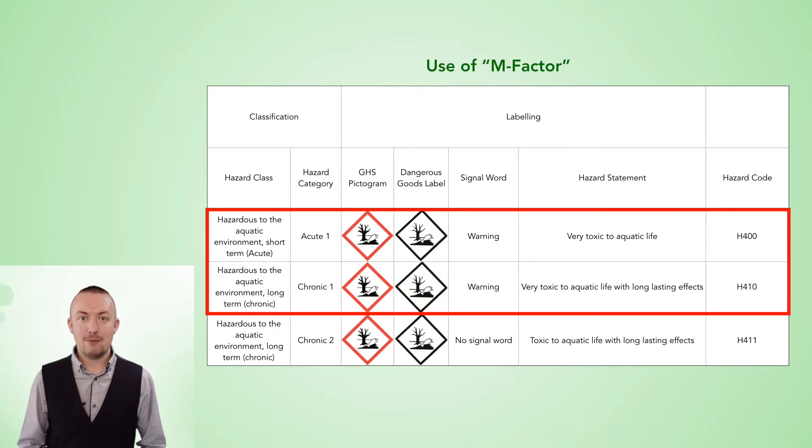Multiplication factors or M-factors as they are known are used in CLP and the dangerous goods regulations for substances which are classified as aquatic acute one and aquatic chronic one in order to weight certain substances which are highly polluting to the aquatic environment.